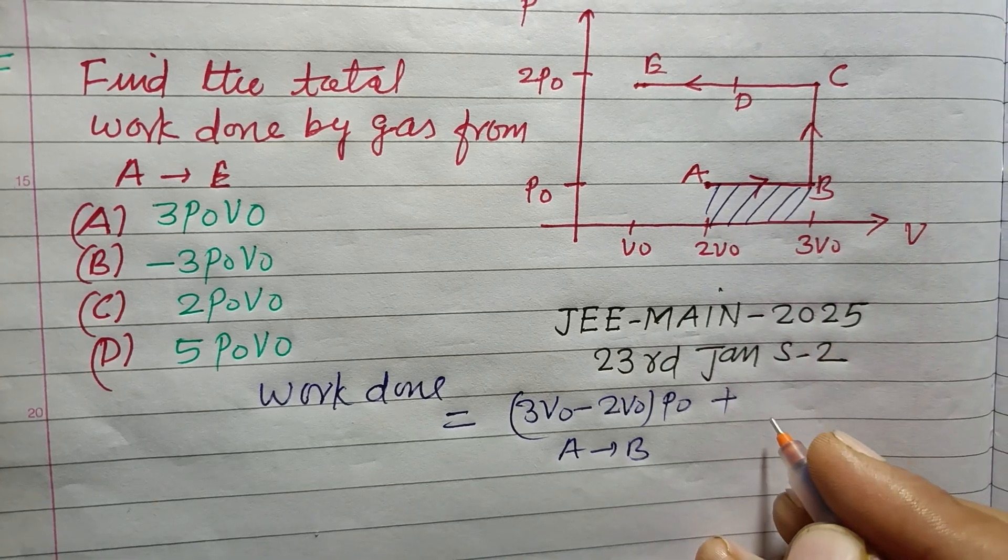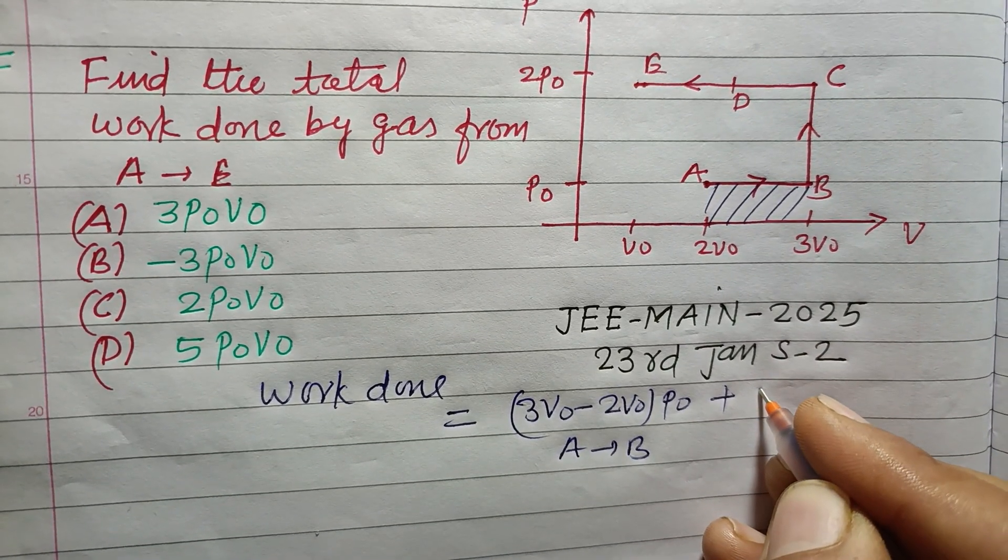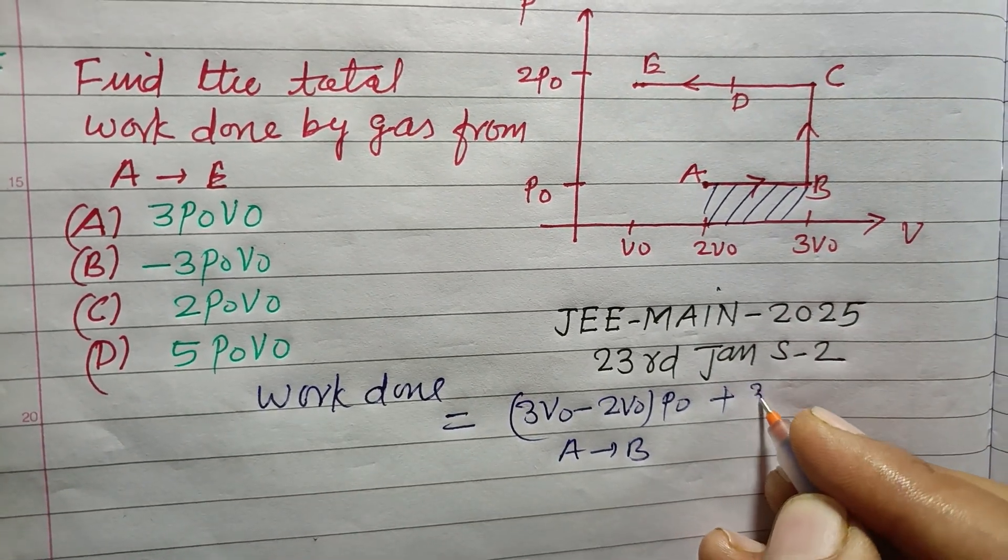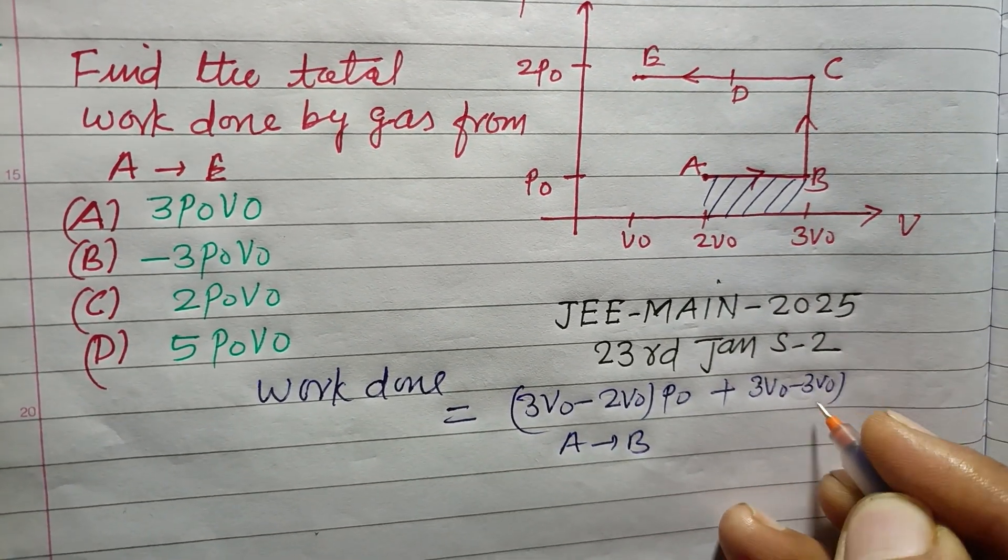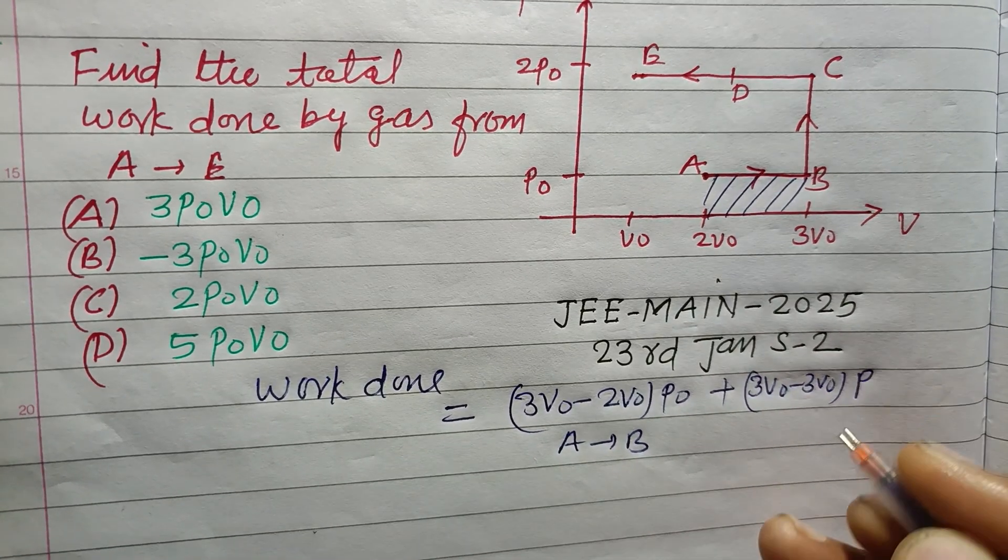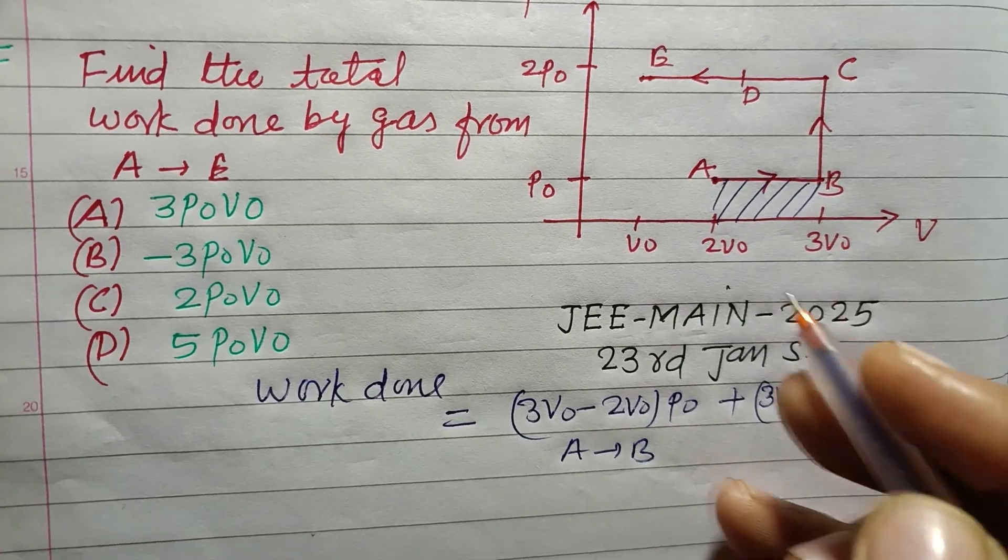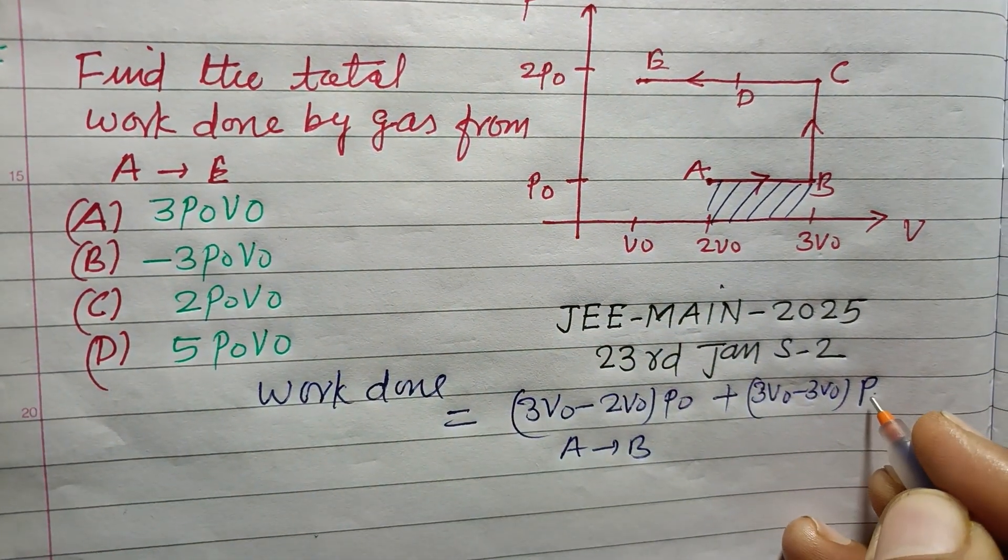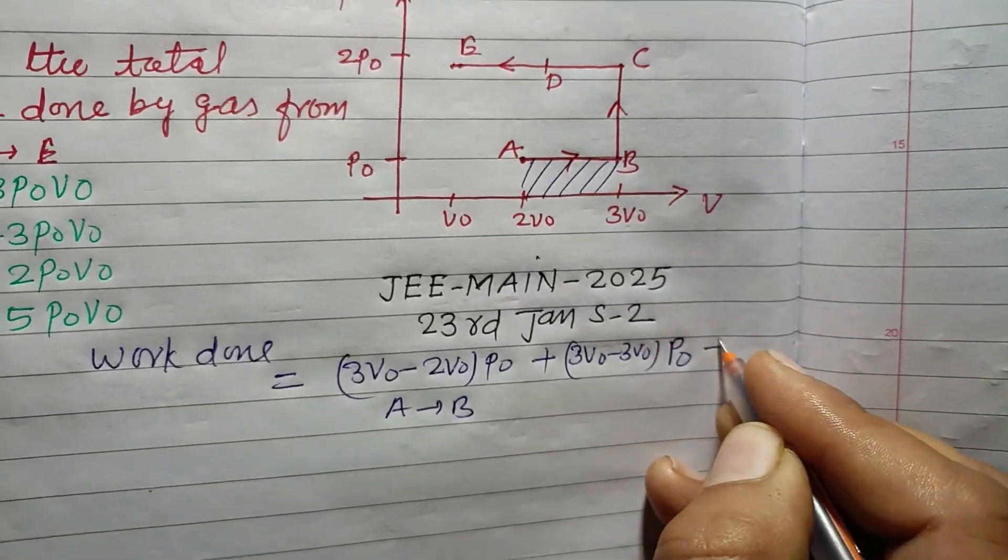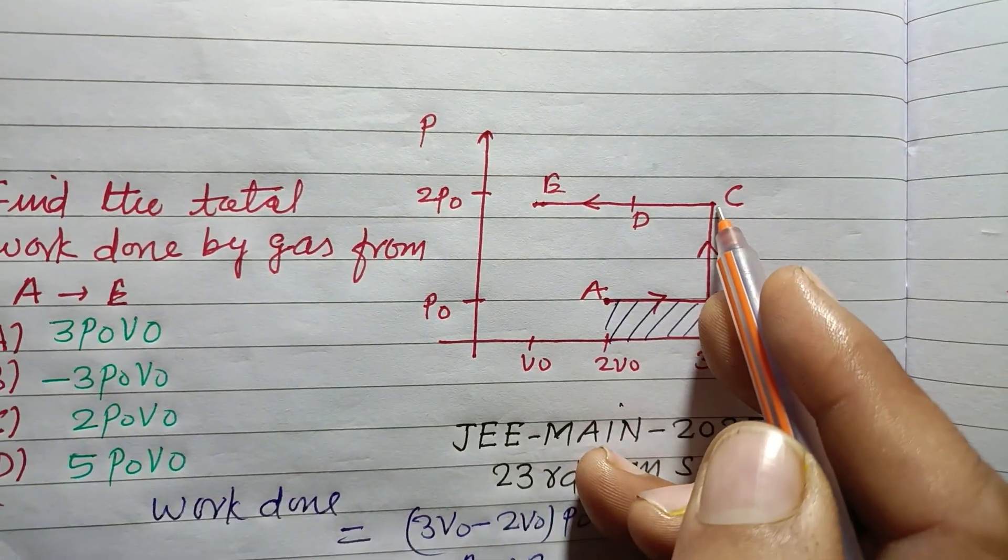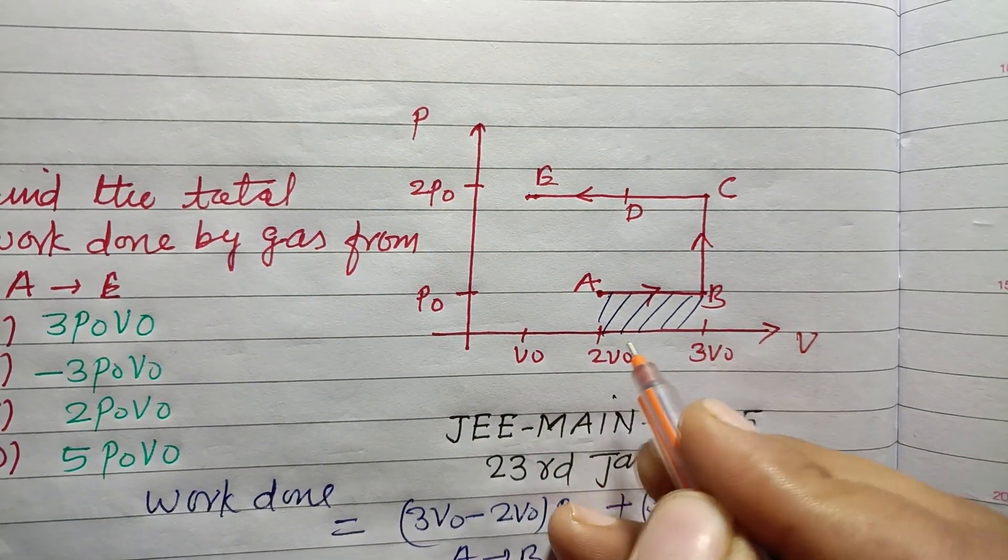Plus from B to C, volume is constant, so 3V₀ minus 3V₀. The pressure changes from P to 2P, so this gives us P₀. From C to D, it moves from 3V₀ to V₀.